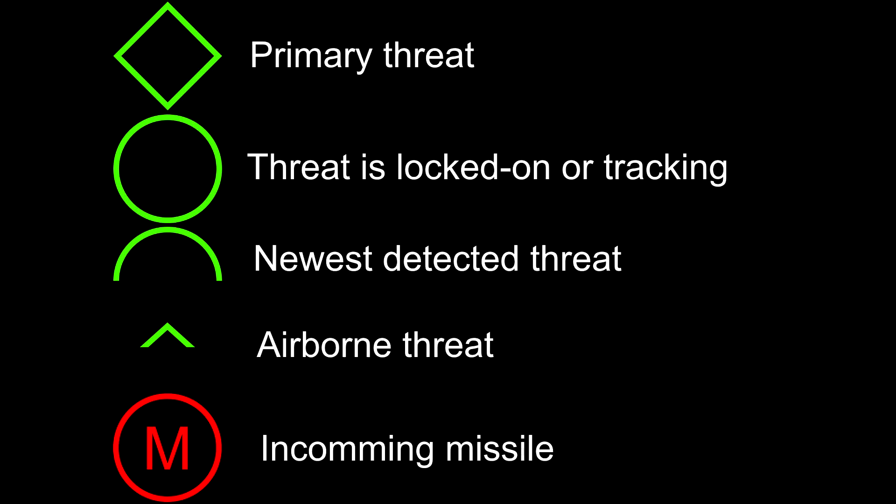Several different symbols will appear on the RWR screen. A diamond shows us the primary threat. A full circle shows that a threat is locking on or tracking the aircraft. A half circle or dome shape shows us which threat is the last detected threat. An arrow or wing shaped icon means that it is an airborne threat, and a big red M in a circle represents an incoming missile.